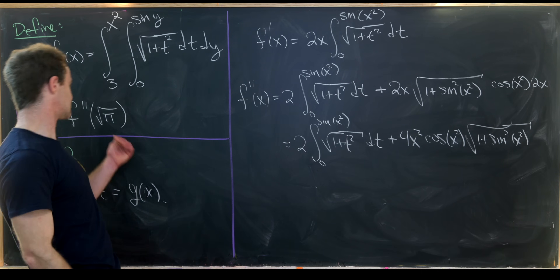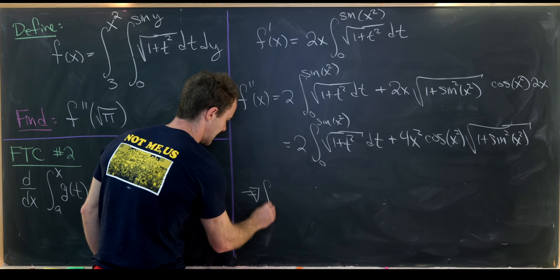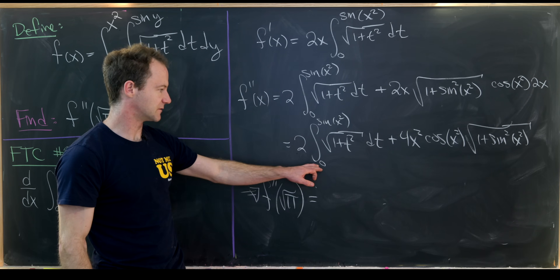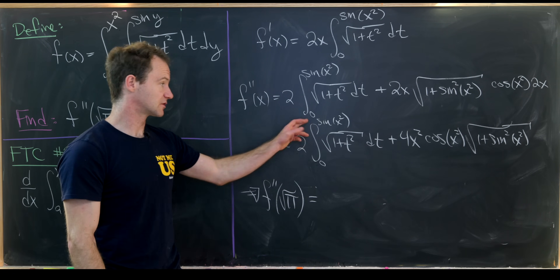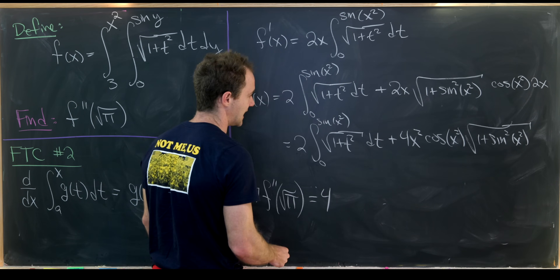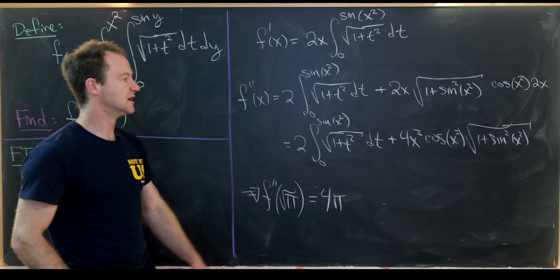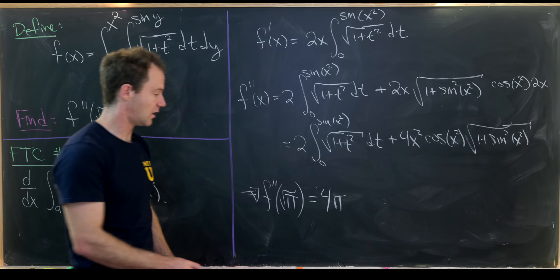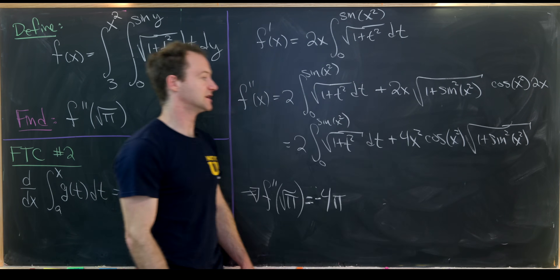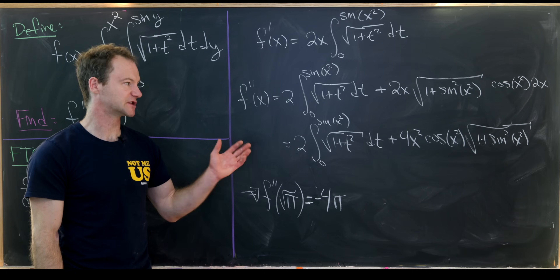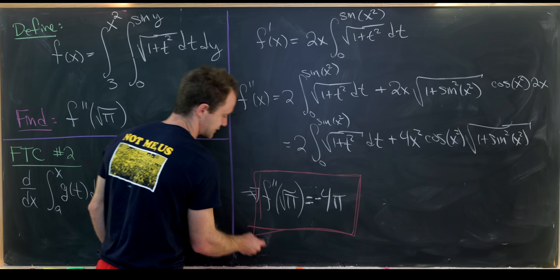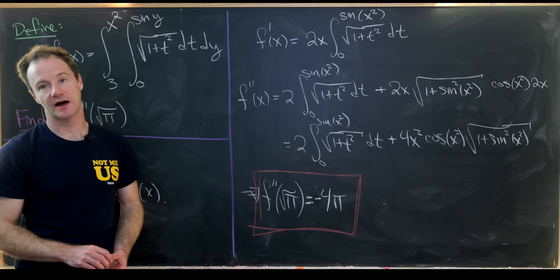Now we evaluate this at x equals the square root of pi. The first term gives the integral from 0 to sine(π), which is the integral from 0 to 0, so that's zero. For the second term: 4 times (√π)² gives 4π; cosine(π) is negative 1; and 1 plus sine²(π) equals 1, so the square root is 1. Therefore f''(√π) equals negative 4π.